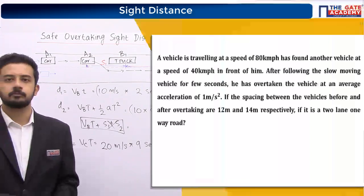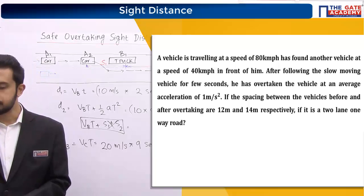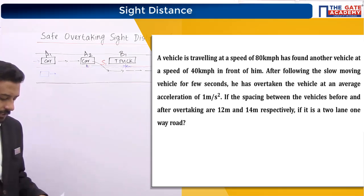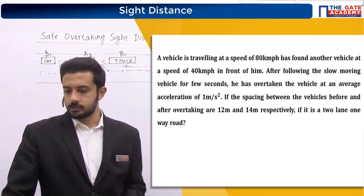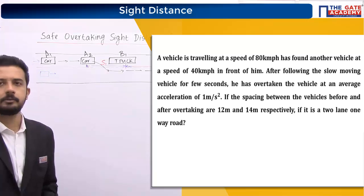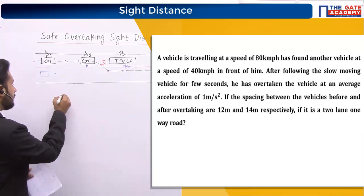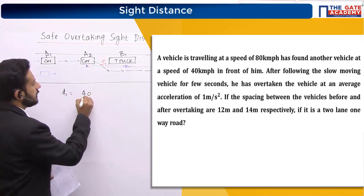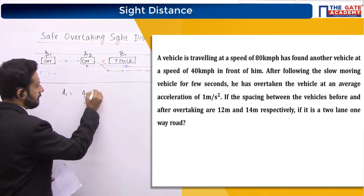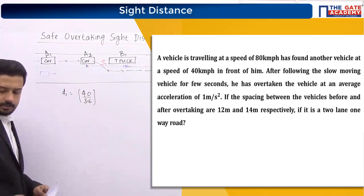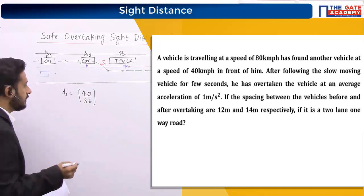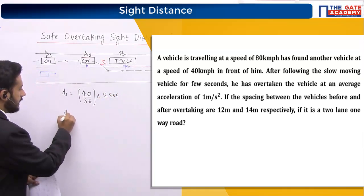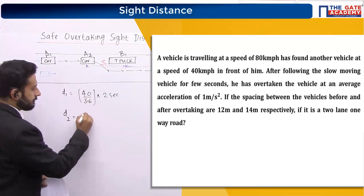Now take this question. If anyone is not getting, please let me know. What are the things given? It is travelling at 80 kmph, and we just need to travel at 40 kmph. So d1 will be equal to 40. I have to convert 40 into meters per second first — divide by 3.6 or multiply by 5/18, both are correct — into 2 seconds. That is the first step.